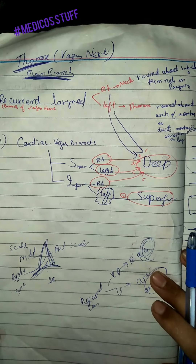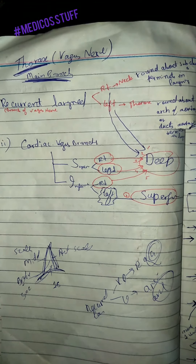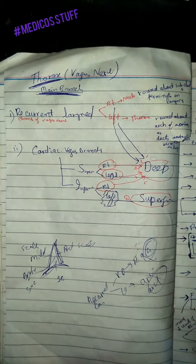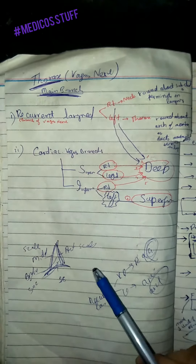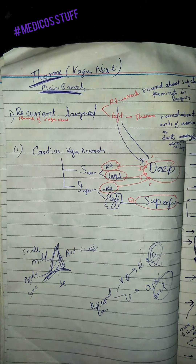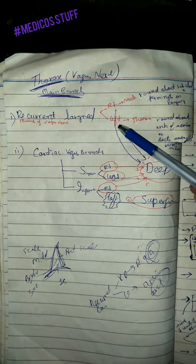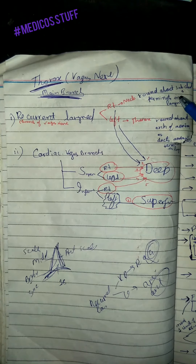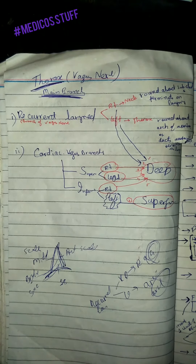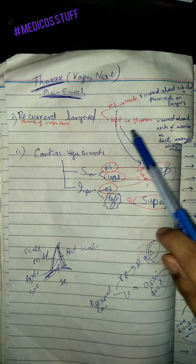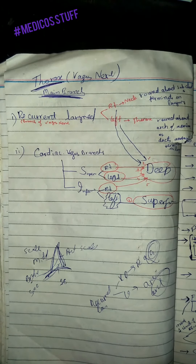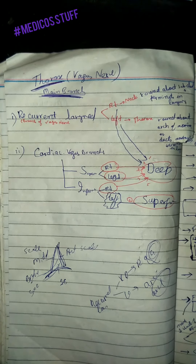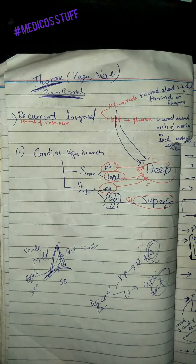At the level of the thorax, the main branch of the vagus nerve is the recurrent laryngeal nerve. The right recurrent laryngeal nerve is at the level of the neck — it winds around the subclavian artery and terminates into the larynx. The left recurrent laryngeal nerve is in the thorax — it winds around the arch of the aorta near the ductus arteriosus and also terminates into the larynx.